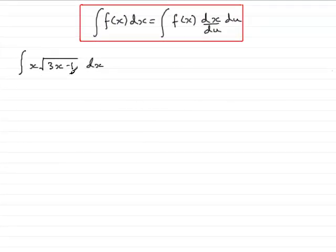Now in this tutorial we've got the integral of x times the square root of 3x minus 1. And when you have square roots like this, we can make a substitution.